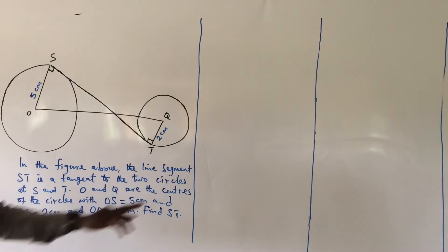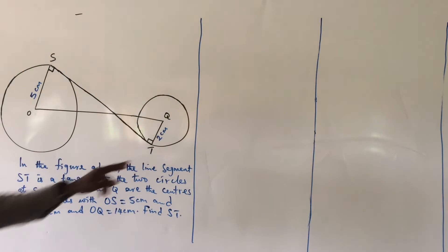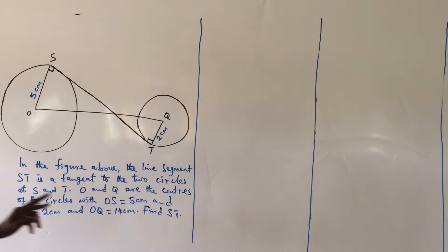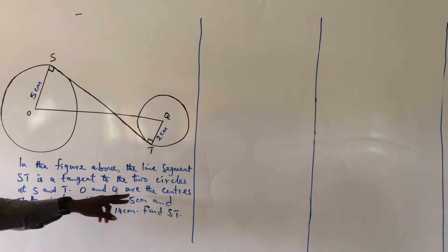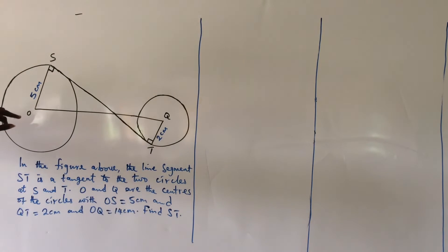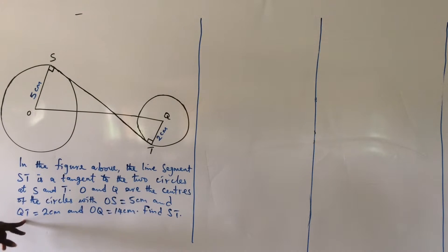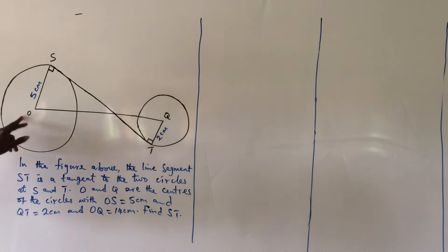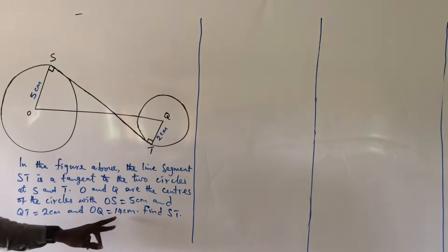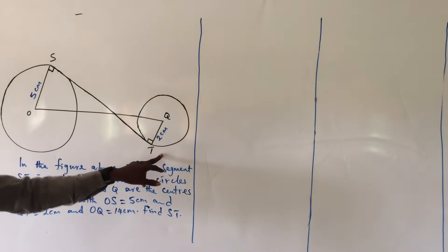The line segment XT is a tangent to the two circles at X and T. O and Q are the centers of the circles, with OX equal to 5 cm, QT equal to 2 cm, and OQ equal to 14 cm. Find XT.